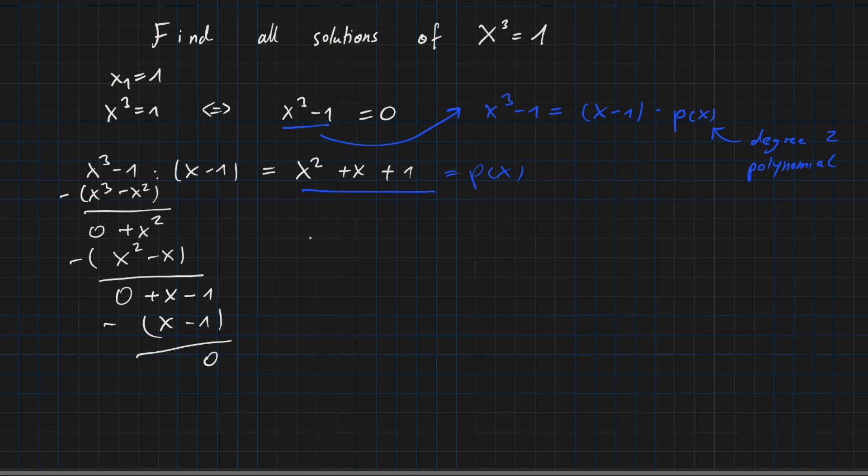So this means this polynomial is our p of x. Hence, x cubed minus 1 equals x minus 1 times x squared plus x plus 1. And how is this helping us? So finding the zeros of our original polynomial is the same as finding the solutions of 0 equals x minus 1 times x squared plus x plus 1. And as we know, a product is always 0 if one of the factors is 0.